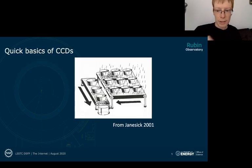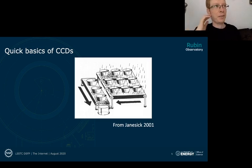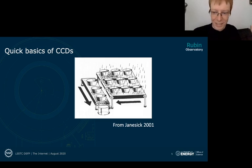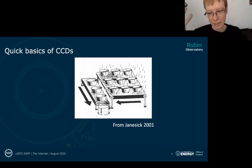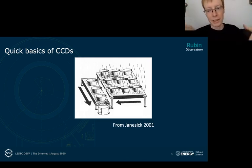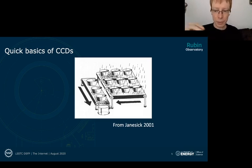I want to make sure we're all on the same page about what a CCD even is. I like to show the bucket brigade analogy because it's helpful at a very basic level — a CCD is a series of buckets in a slab of silicon. As photons rain down on that array of buckets, those buckets collect electric charge.